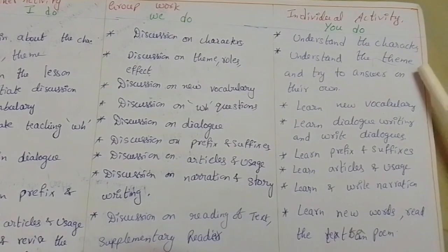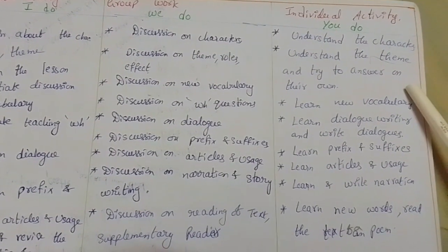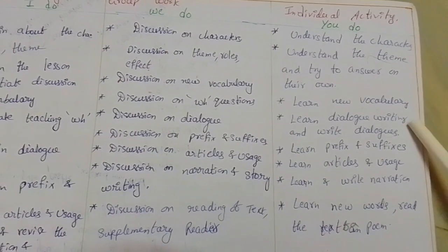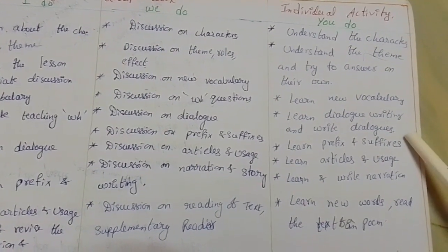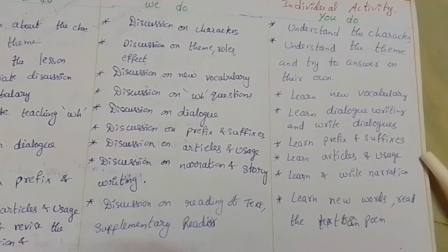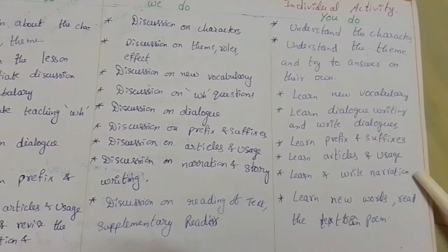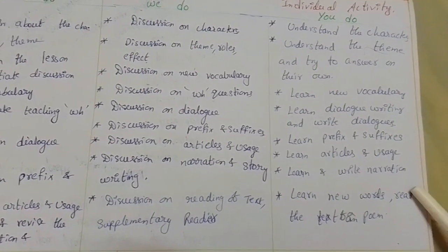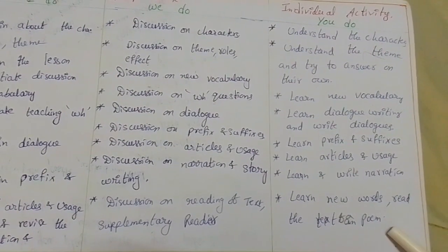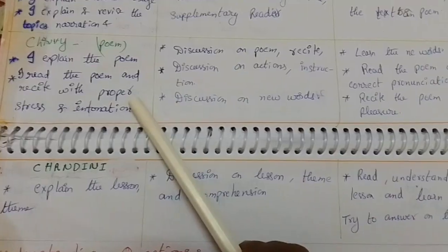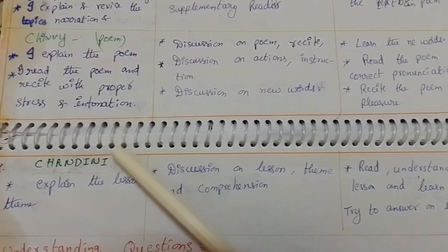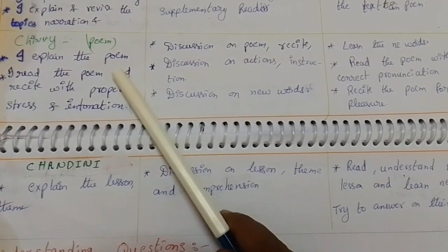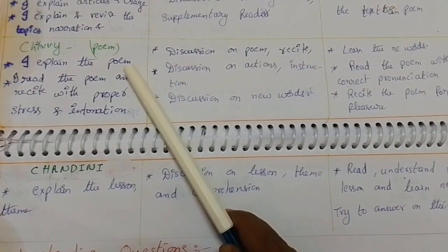For individual activity — you do: students understand the characters, understand the theme and try to answer on their own, learn new vocabulary, learn dialogue writing and write dialogues, learn prefixes and suffixes, articles and usage, learn and write narrations, learn new words, read the text and poem.